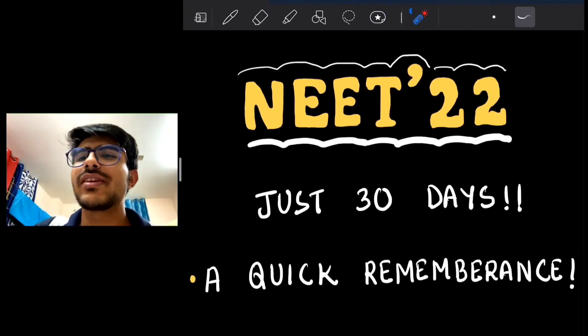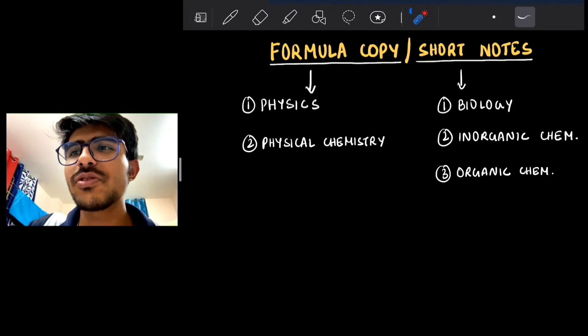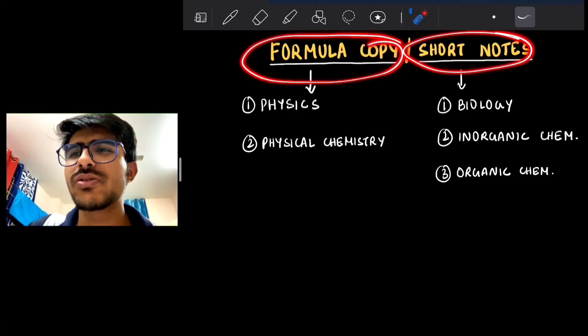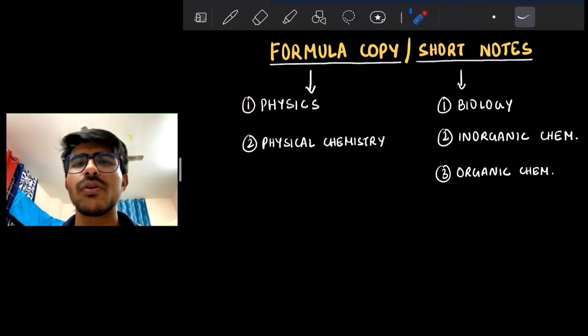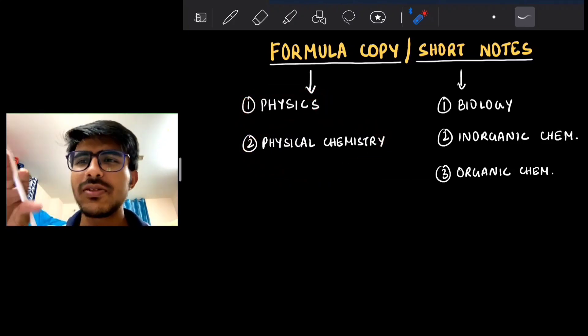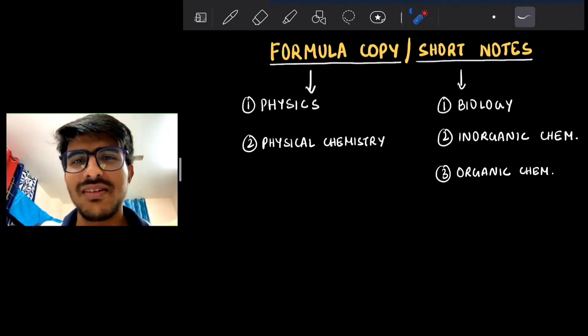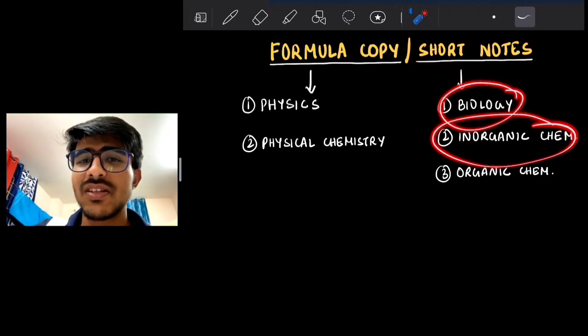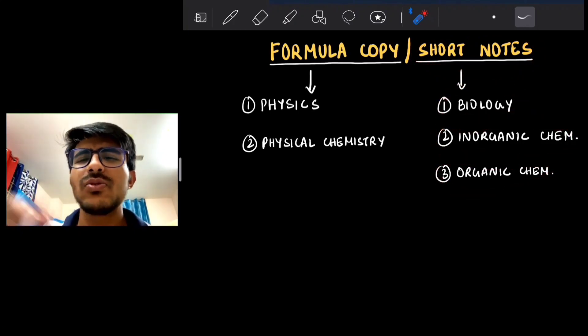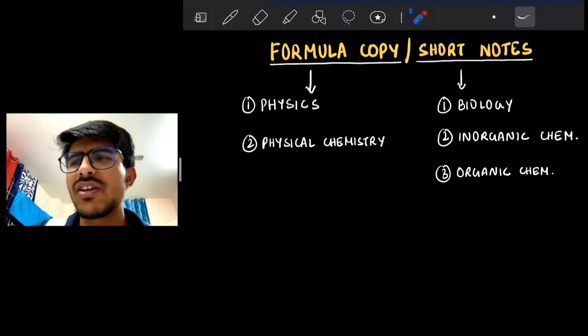Just a few points regarding your last month preparation. First of all, talking about your formula copies or short notes. We make formula copies for subjects like physics and physical chemistry where we have a lot of formulas and concepts, so we concise all of them and make a notebook. We make short notes for subjects like biology and organic chemistry where we need to do a lot of ratification, so we concise the important points. If you have not made formula copies or short notes, no need to worry, but I'll suggest you make short notes for some important chapters.